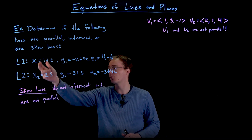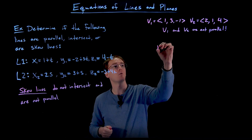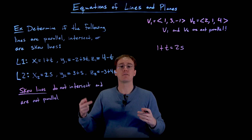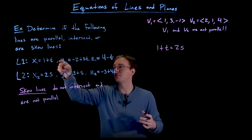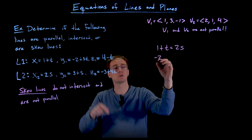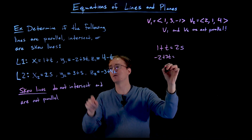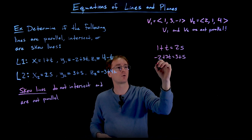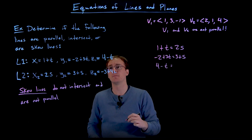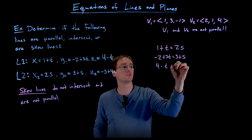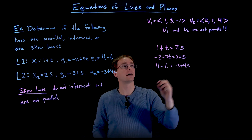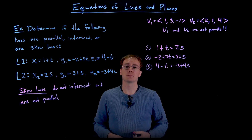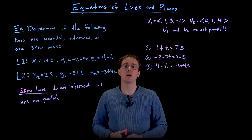Setting the coordinate equations equal gives us a system: equation 1: 1 + t = 2s; equation 2: −2 + 3t = 3 + s; equation 3: 4 − t = −3 + 4s. We now need to solve this 3-by-3 system of linear equations.